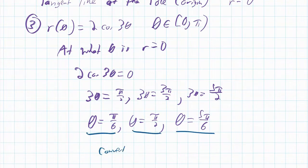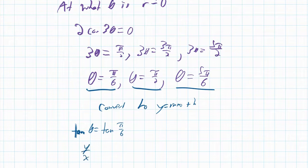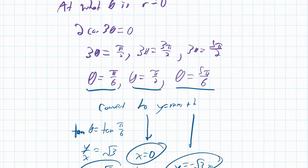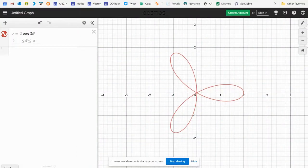To convert these to y = mx lines through the origin, we take the tangent of each θ. For θ = π/6: tan(π/6) = 1/√3, so y = (1/√3)x. For θ = π/2: the tangent is undefined, so that's the vertical line x = 0. For θ = 5π/6: tan(5π/6) = −1/√3, giving y = −(1/√3)x.